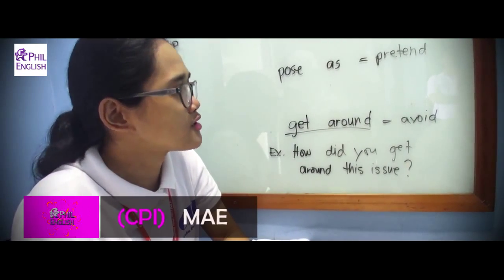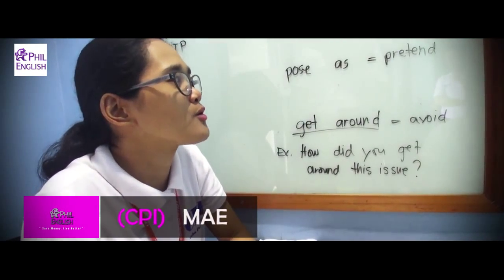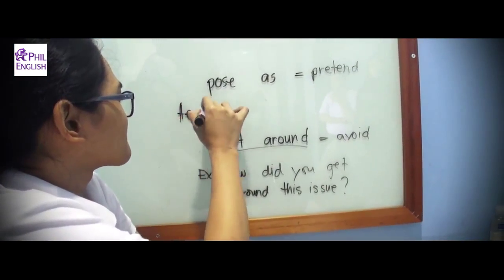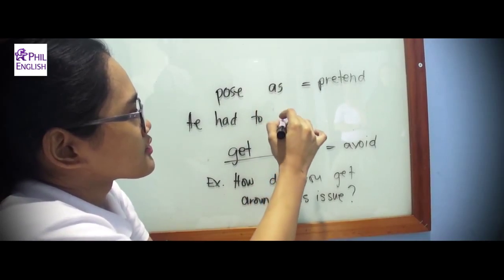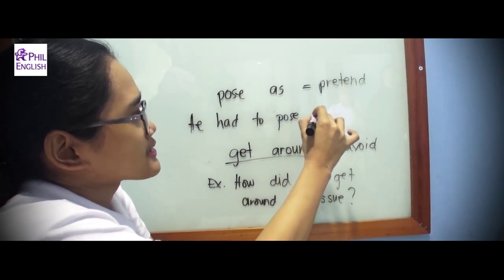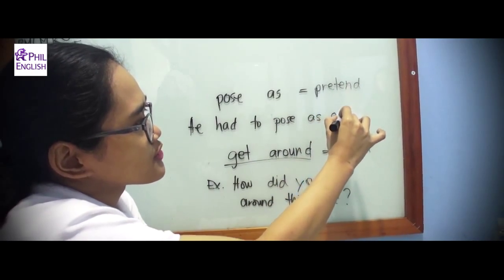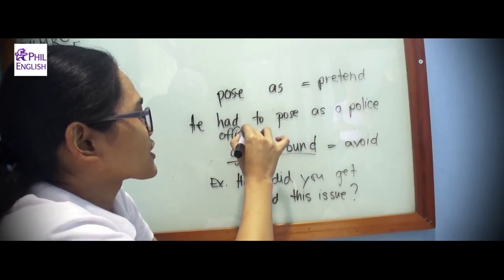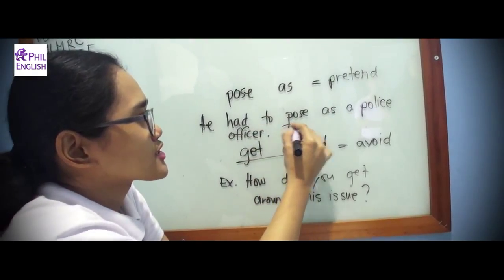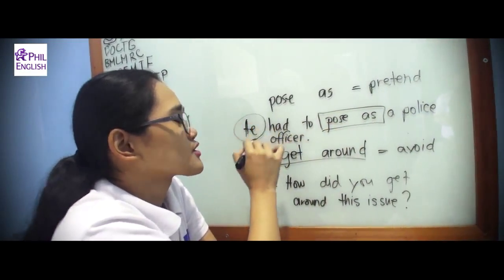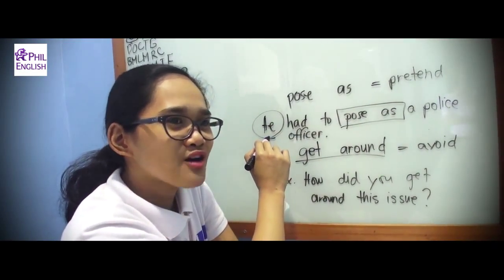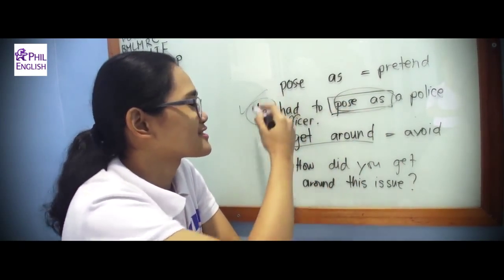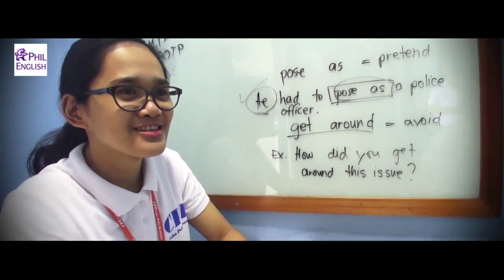Could you give me an example of when we use 'pose as' in a sentence? 'He had to pose as a police officer.' So in this case, this person pretended to be a police officer even though he's not a police officer. So 'pose as' — this is a correct sentence.